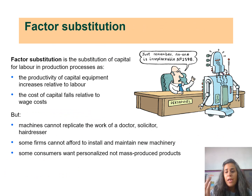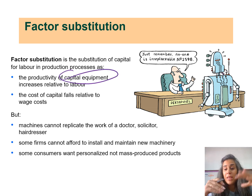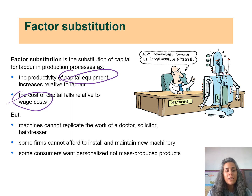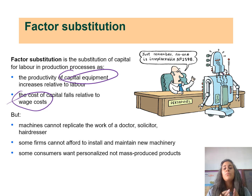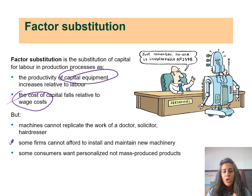Factor substitution means replacing workers with machinery. If the productivity of capital equipment increases relative to labor, or if the cost of capital falls relative to wage costs, then workers would be substituted with machinery. However, barriers exist: machines cannot replicate the work of a doctor, lawyer, or hairdresser providing personalized services; some firms cannot afford to install and maintain new machinery; and some consumers want personalized rather than mass-produced standardized products.